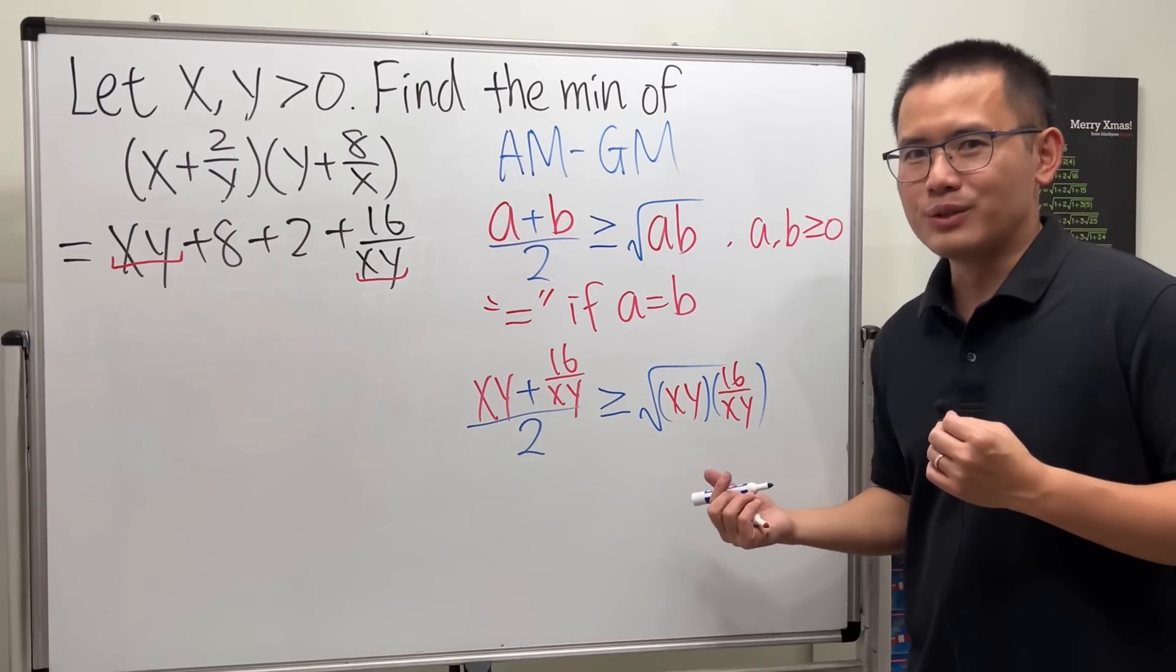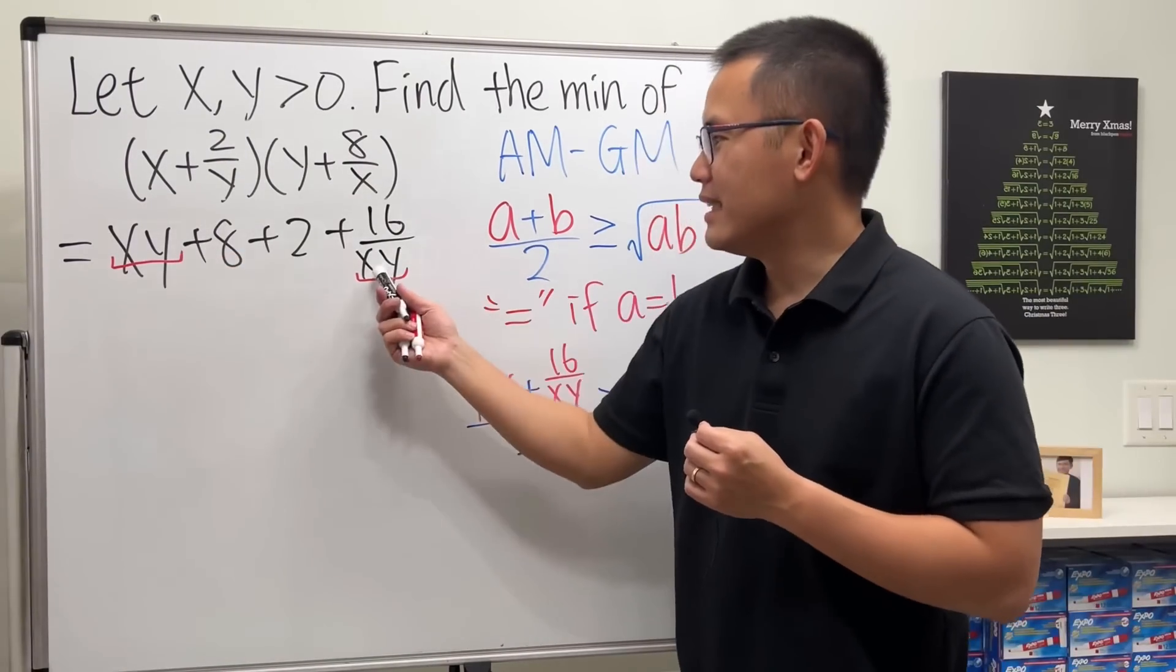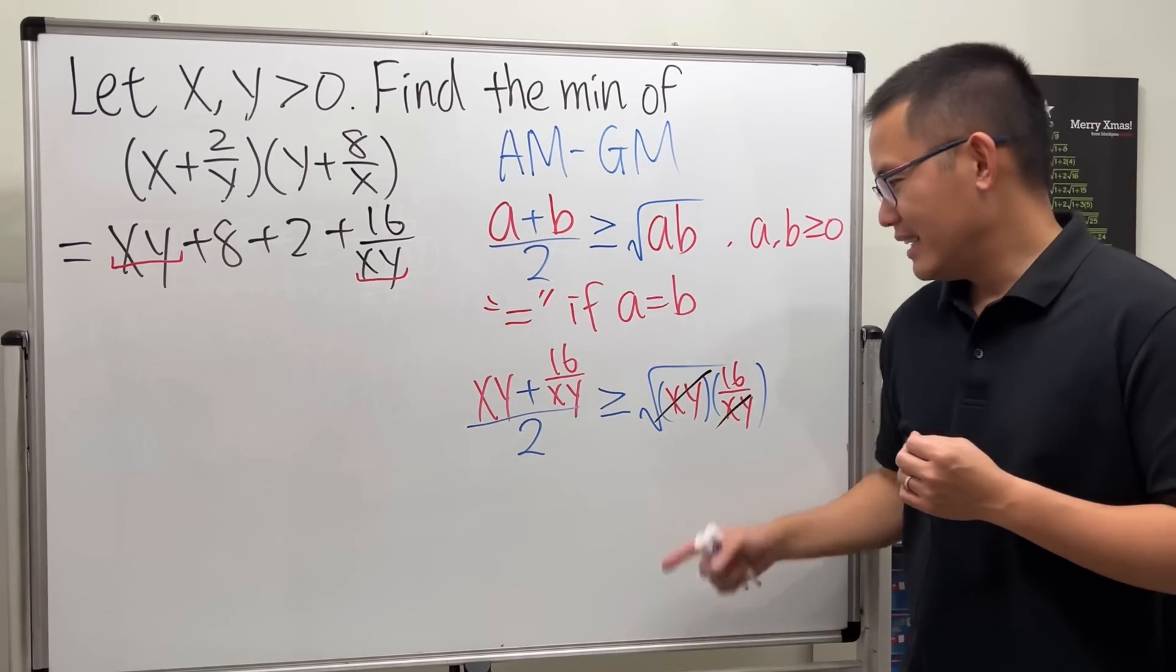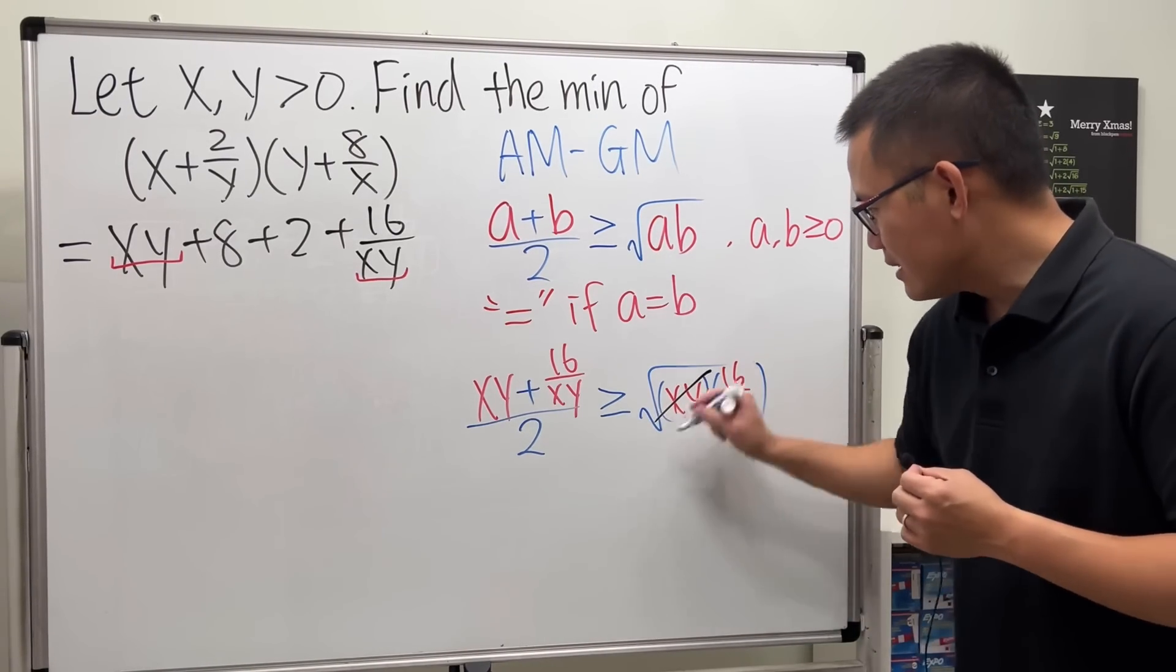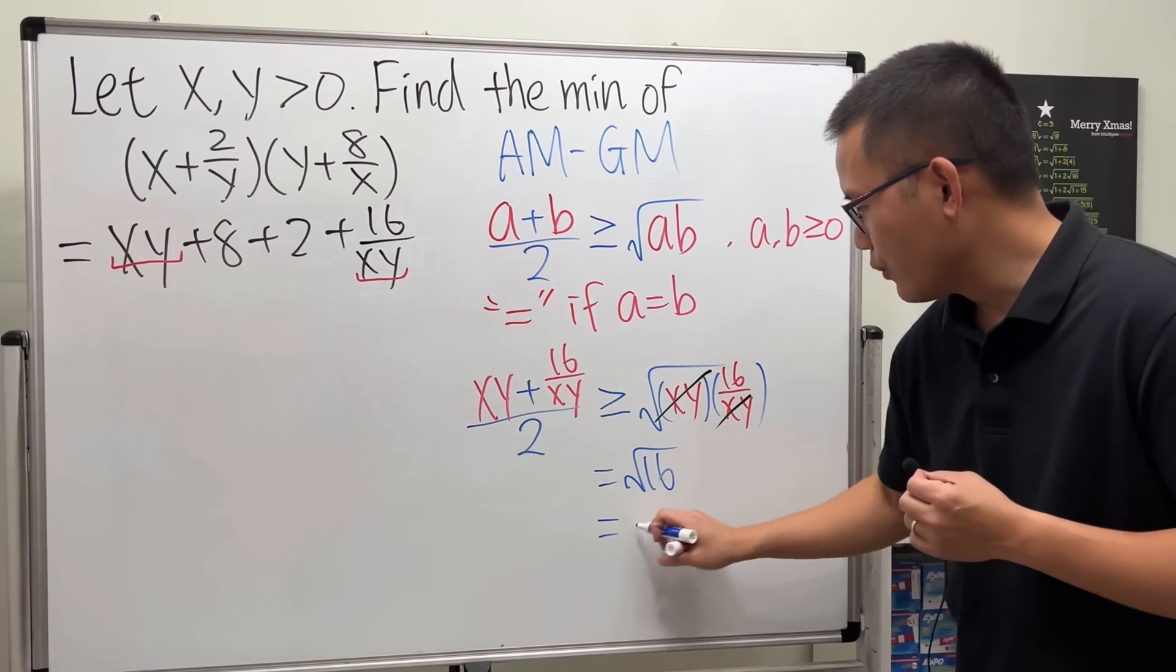Isn't this so nice? That's why I told you, if we have this right here and then the same thing on the bottom, this and that cancel exactly. And as you can see, this expression is equal to square root of 16, which is just equal to 4.